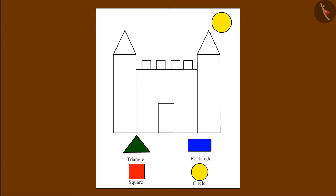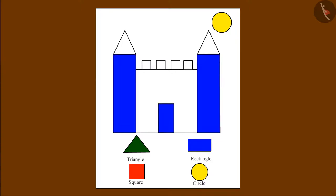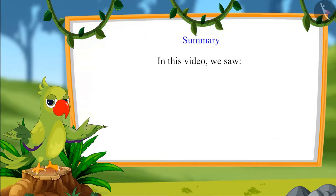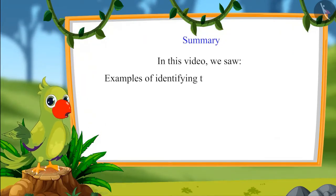Now all the rectangles have to be filled with blue color. Can you identify the rectangles in this picture? Here are the rectangles, so we will fill blue color in them. After this, fill the squares with red color — can you identify the squares? Here are the squares, so we fill them with red color. Now we come to the triangle — in the triangle we have to fill the green color. Color is now filled in the whole picture.